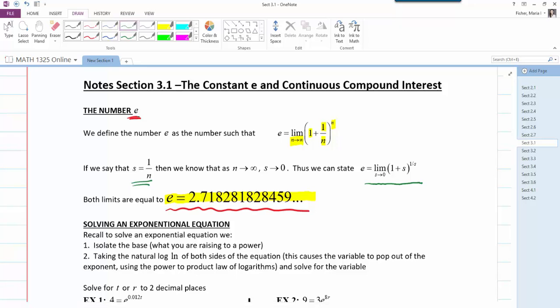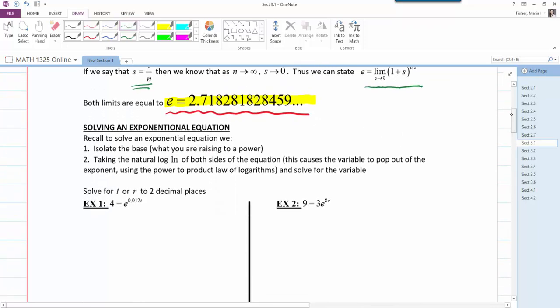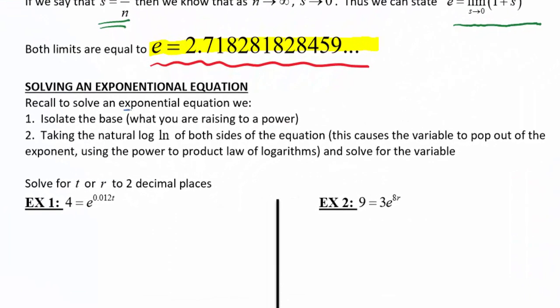Before we get into continuously compounded interest, let's recall how to solve an exponential equation — an equation where the variable is in the exponent position. First, isolate the base: get whatever is being raised to a power all by itself. Then take the natural log of both sides, which causes the variable to pop out of the exponent using the power rule of logarithms. Then solve for the variable.